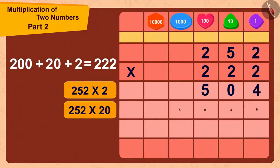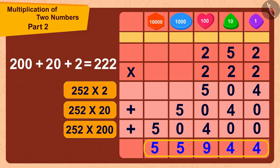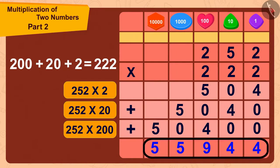We can find the answer to this multiplication in this way. Well done, children. Your answer is absolutely correct. Bola now has 252 times 222 or 55,944 toffees.